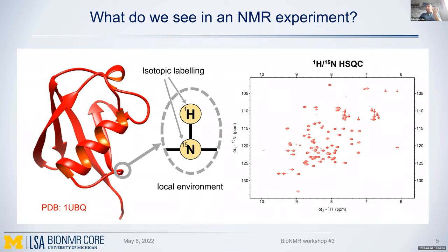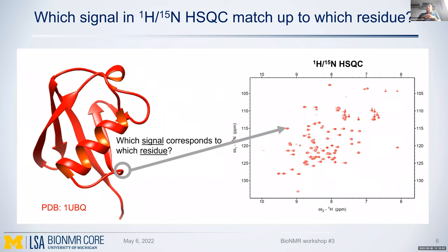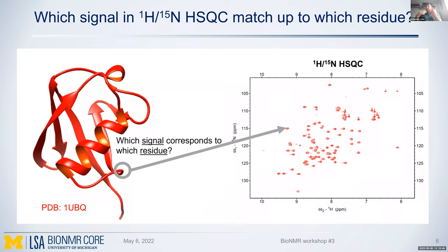Once you see something like this, you can try to figure out the scientific question: which signal in the HSQC corresponds to which residue on our protein? Similar questions can be asked for other biomolecules like RNA and DNA, but today we focus on proteins. We don't know which residue gives rise to which signal, so we'll try to do this mapping - a process called chemical shift assignment. To do this, we have to run a bunch of different experiments.